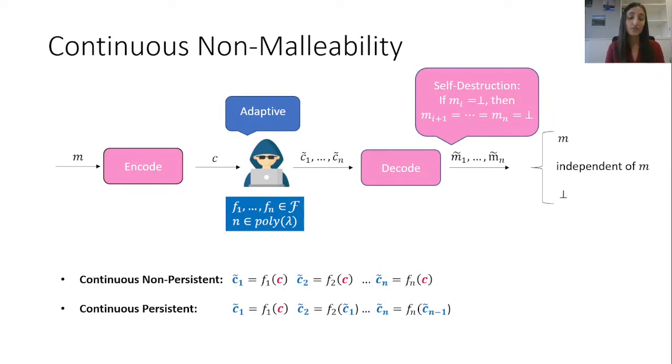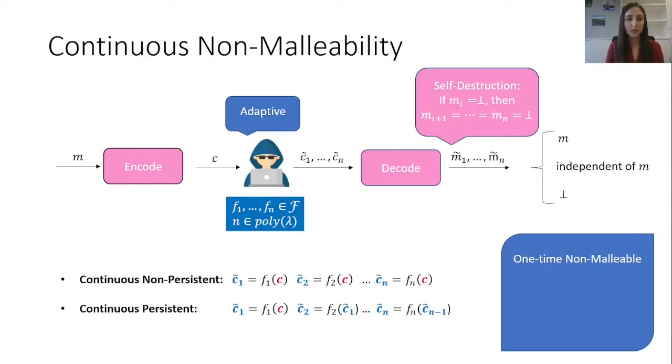The second is persistent tampering. Here, each tampering function is applied to the outcome of the previous tampering attempt. When referring to the classic notion of non-malleability, we use the term one-time non-malleability. It's not hard to prove that, in general, this does not imply continuous non-malleability.